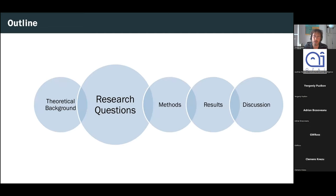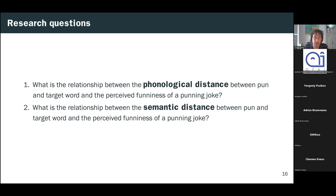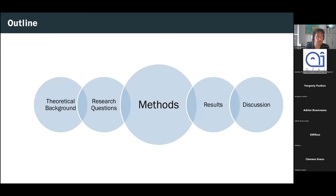So, on to the next part of the talk, very short one, a presentation of the research questions. And basically we had two in the present study. First of all, what is the relationship between the phonological distance between the pun and the target and the perceived funniness of the pun engine? And second, what is the relationship between the semantic distance between the pun and the target word and the perceived funniness of a pun engine? Those are the two questions. Here are the methods we used to answer those two questions, attempt to answer those two questions.